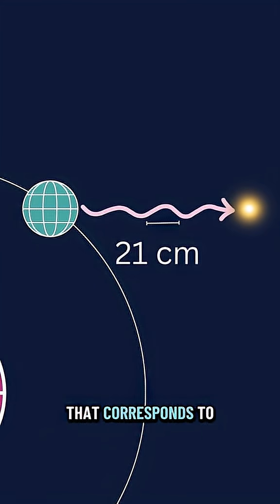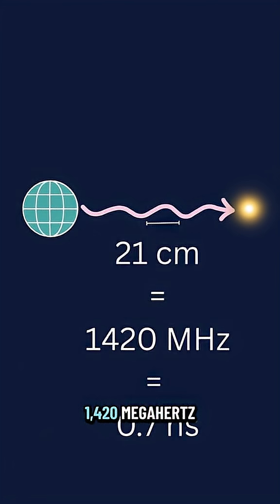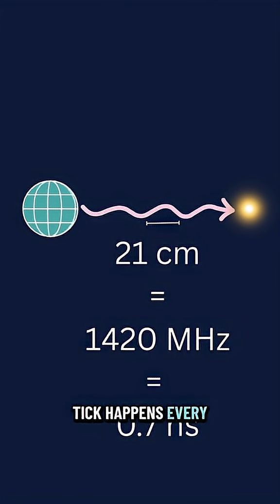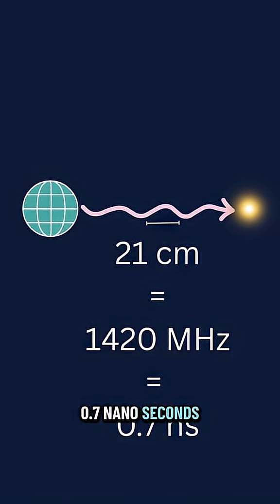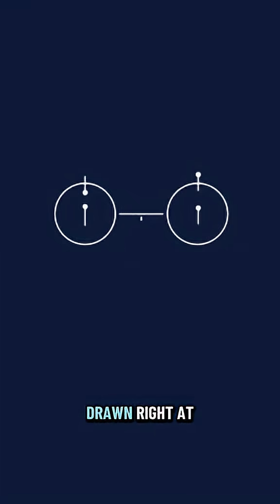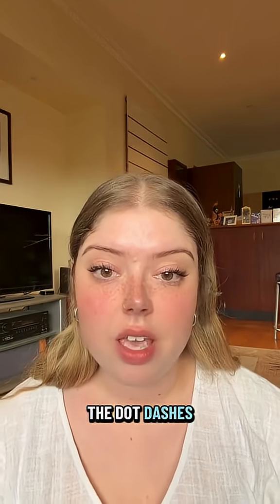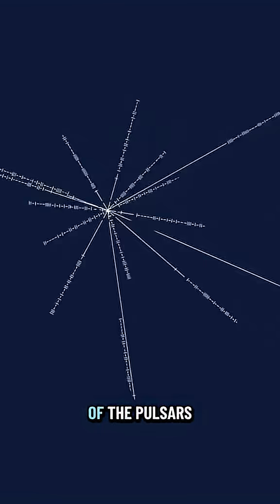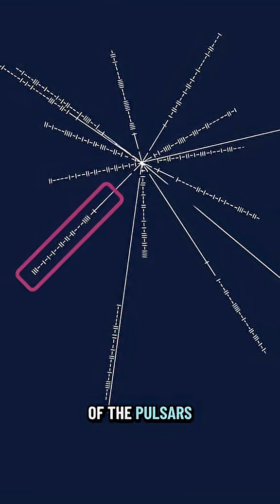That corresponds to a frequency of 1420 megahertz, meaning one hydrogen tick happens every 0.7 nanoseconds. So on the plaque the hydrogen spin flip is drawn right at the top — it's our key. The dot-dashes are the periods of the pulsars in units of 0.7 nanoseconds in binary.